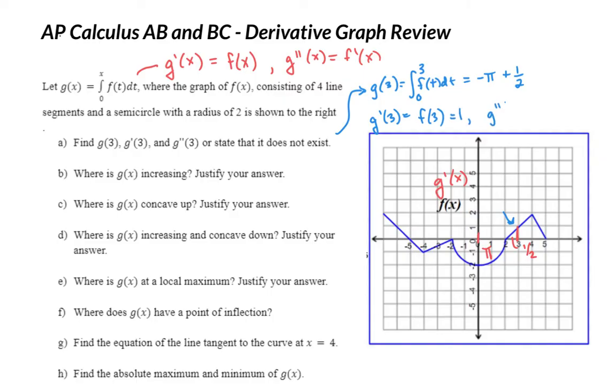And g double prime of 3 is saying find f prime of 3. Well, f prime of 3 is saying what's the slope of this line? It's 1. Now the end of this question says or state that it does not exist. A spot that might not exist would be something like up here at 4. If I said find g double prime of 4, so f prime of 4, there's a corner there so it's not differentiable. So that's a situation where you'd say it doesn't exist. But everything works fine here at 3.